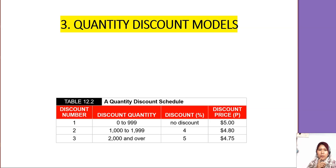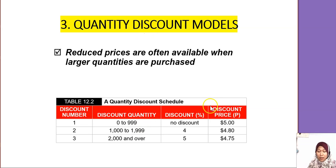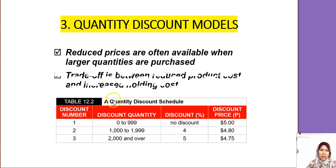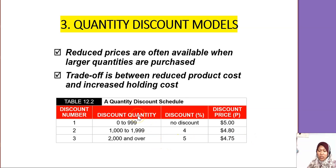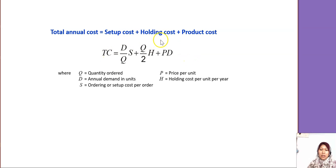Now we're going into the model for quantity discount. For this model they will have a table — most questions give you a different price involved. If you buy zero to 99, this other price; when you buy 1000 to 1999, this other price. They give you a range for the discount price. It sometimes seems cheaper but you have to buy more — whether it's worth it, you have to do the calculation. The total cost formula for quantity discount involves the product cost, the price, and the demand.